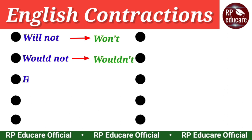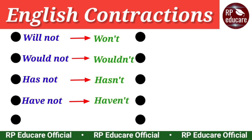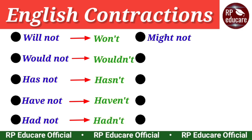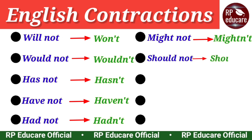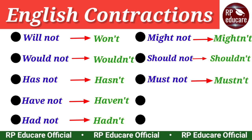Has not - hasn't. Have not - haven't. Had not - hadn't. Might not - mightn't. Should not - shouldn't. Must not - mustn't.